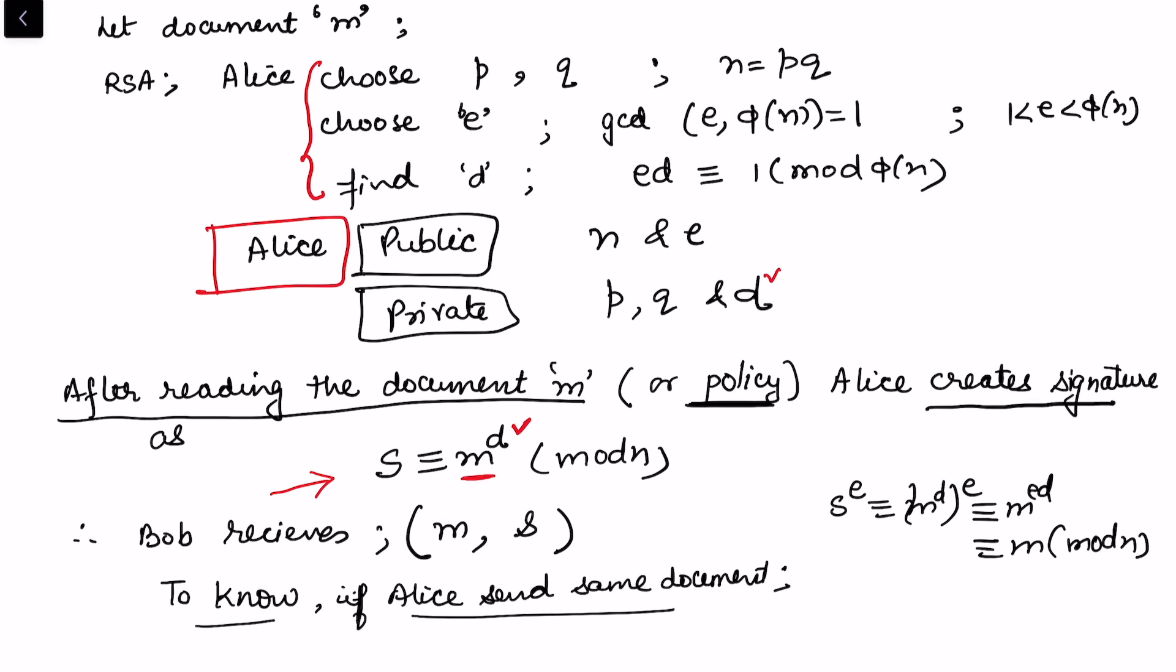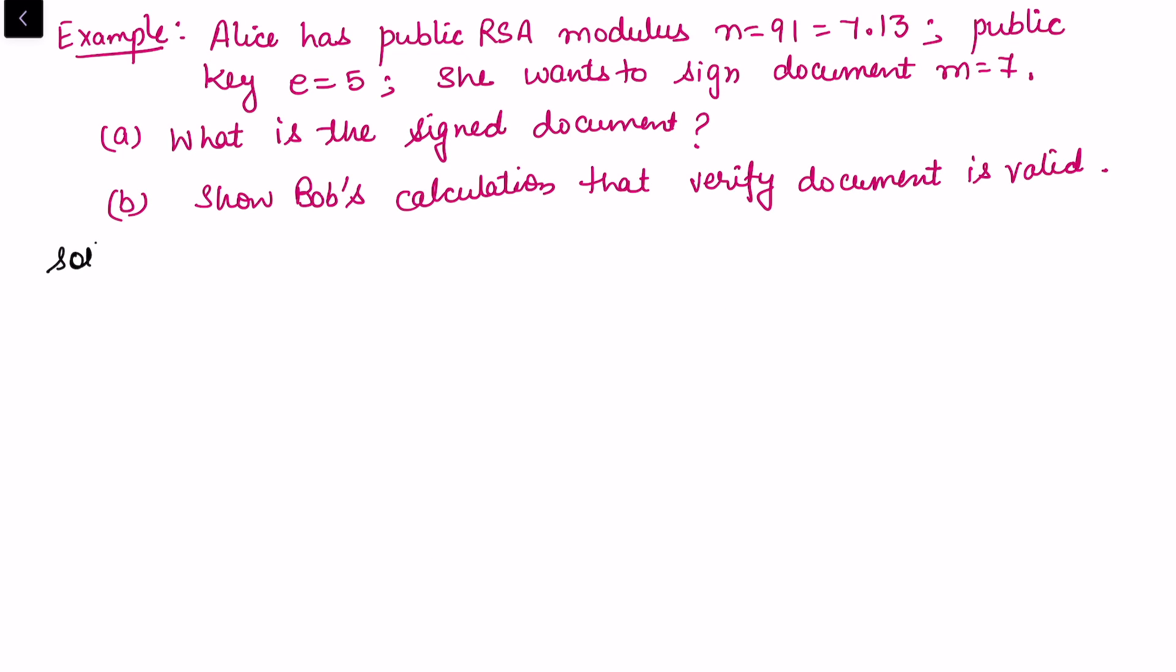Let's see this process in an example. Alice has public RSA modulus n equals 91 equals 7 times 13, and public key e equals 5. She wants to sign the document m equals 7. What is the signed document? We want to know what is m and s. Obviously m is already given, but we want to know what is the signature.